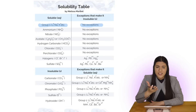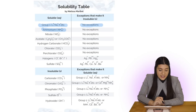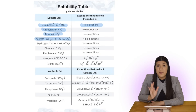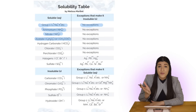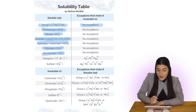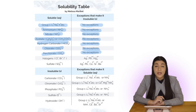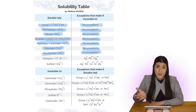Ammonium is the same exact thing, same with nitrate, acetate — and remember, acetate can be written in two different ways — and then hydrogen carbonate, chlorate, and perchlorate. All of those have absolutely no exception to the rule, meaning it's always going to be soluble whenever that ion is placed within a compound.